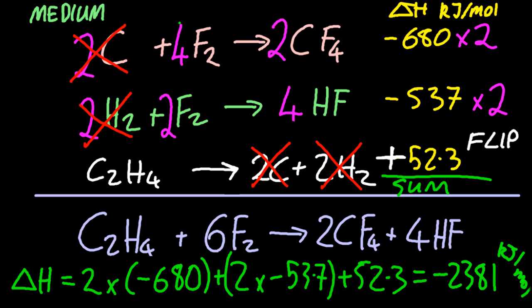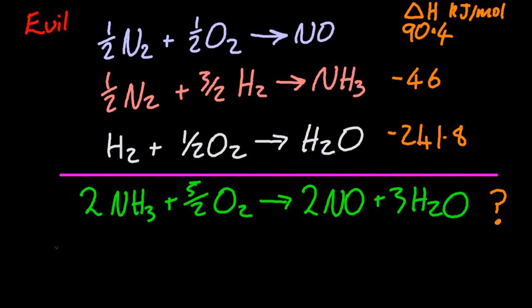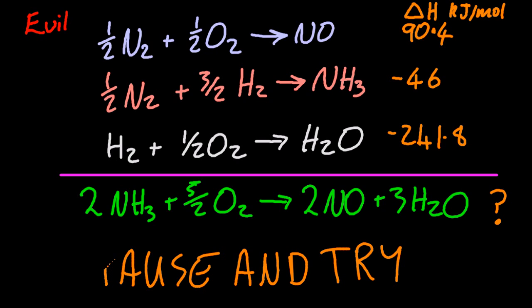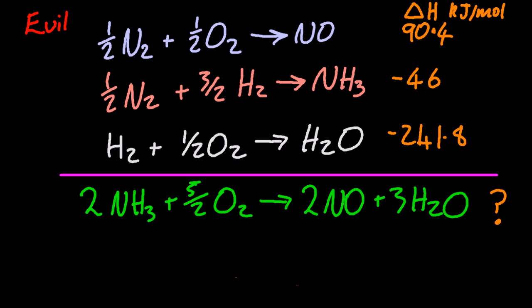All right, that's about as hard as we'd ask you to do. Three equations turning into one. But here's an evil one. Why not pause it and have a little go? Welcome back. So how'd you do? Hopefully, you doubled the top, doubled and flipped the second, and tripled the third. And got that number for the answer.